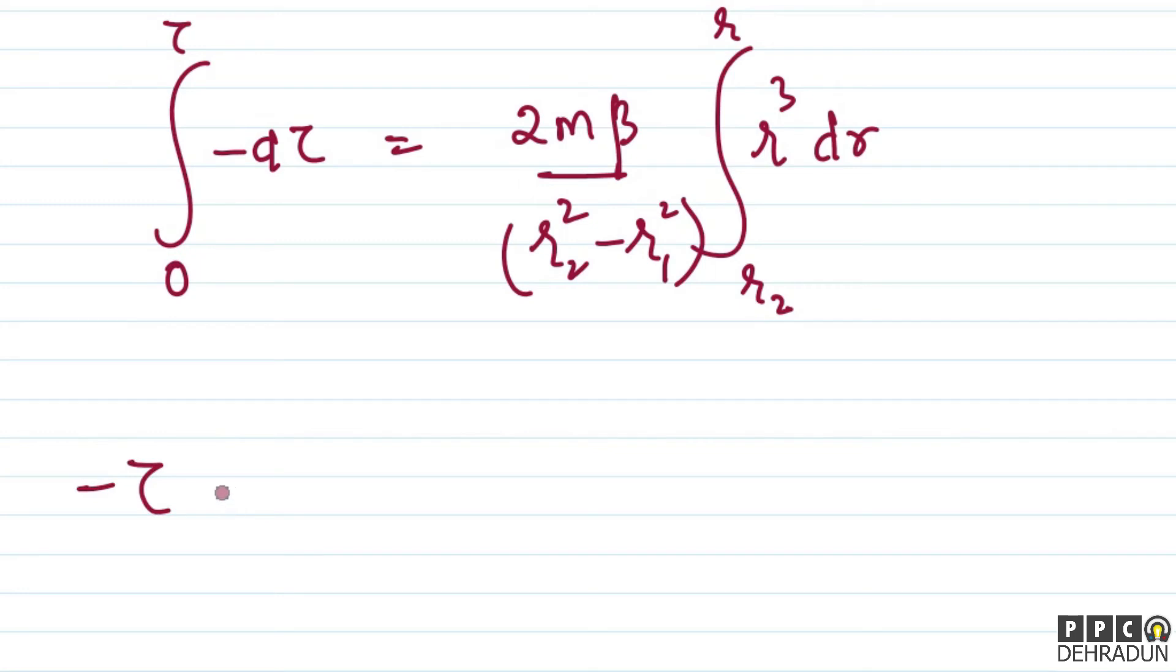Now let's integrate. We get: minus tau equals 2m beta upon r2 square minus r1 square - which is common - and then, what do we get? r to the power 4 by 4. So we can write here: r to the power 4 minus r2 to the power 4, upon 4.